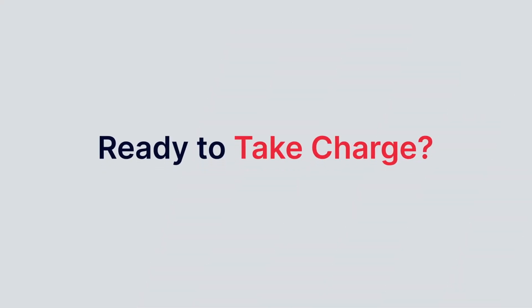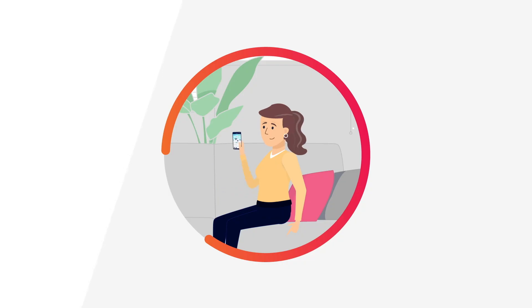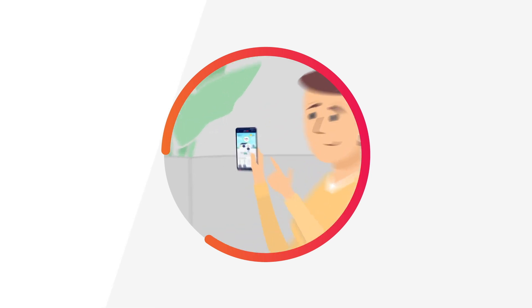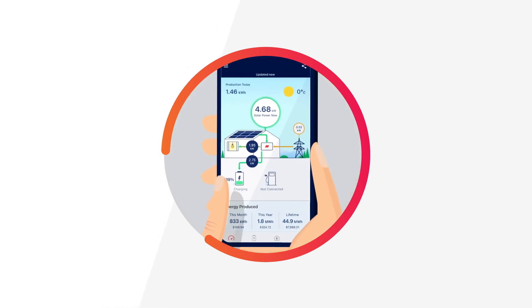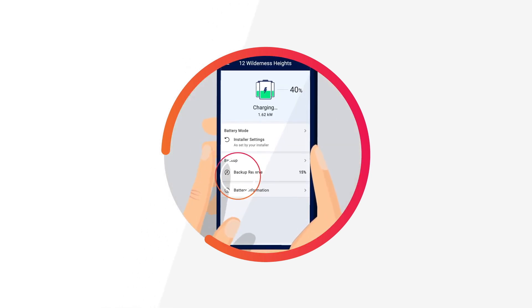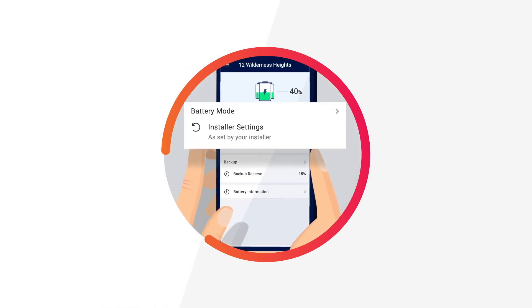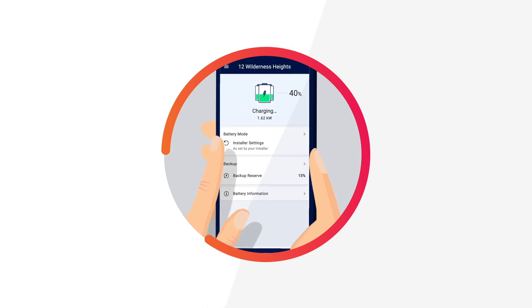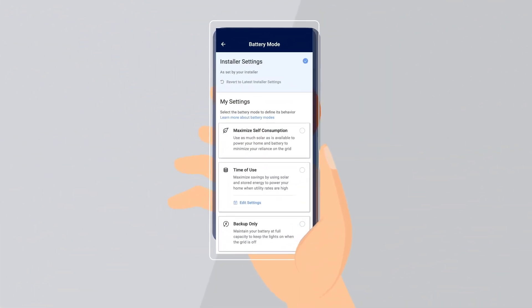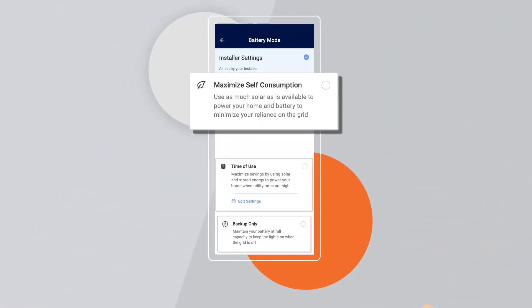Ready to take charge? Simply open My SolarEdge and tap the battery icon. On the battery page, click on the battery mode section to explore your options.